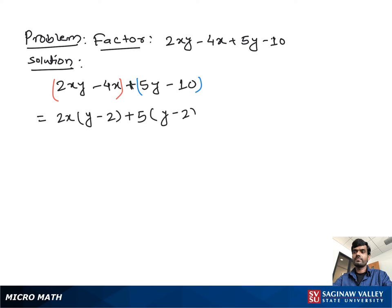Now as you see, in both terms we take out (y - 2) as a common factor, and then we have 2x + 5 left. This is our final factored form.